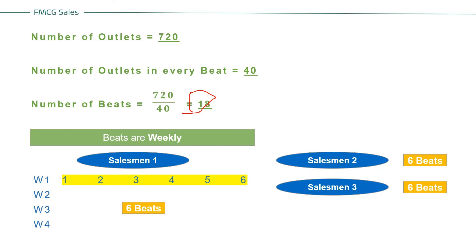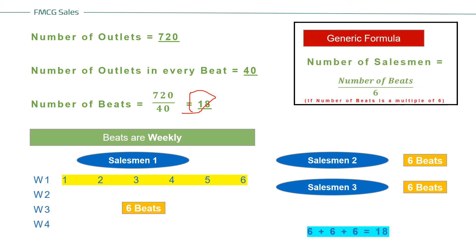Salesman 1 covers 6 beats, Salesman 2 covers 6 beats, and Salesman 3 covers 6 beats — six plus six plus six equals 18 beats. So, three salesmen are required to cover 18 beats. From this we derive one generic formula: Number of Salesmen = Number of Beats ÷ 6.